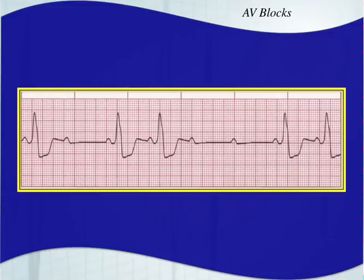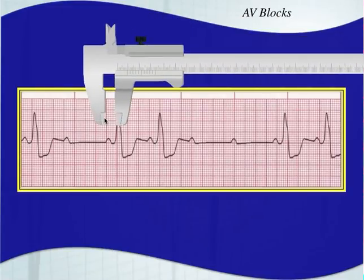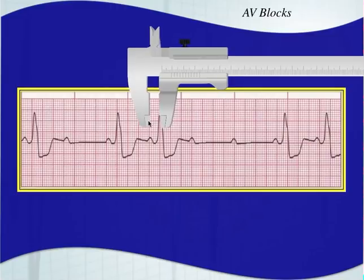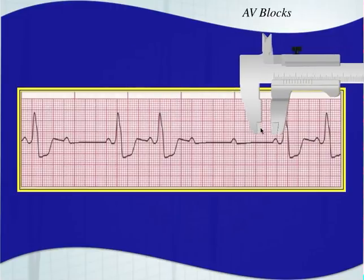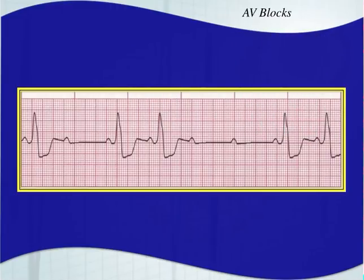Another example: is our PR interval a constant length? Yes, it is consistent where we have one. Second question — do we have dropped beats? Yes: P waves with no QRS, P wave, P wave. This is a second degree type 2, Mobitz 2.